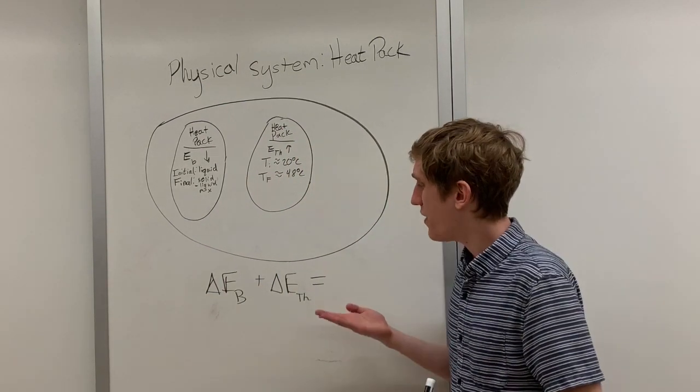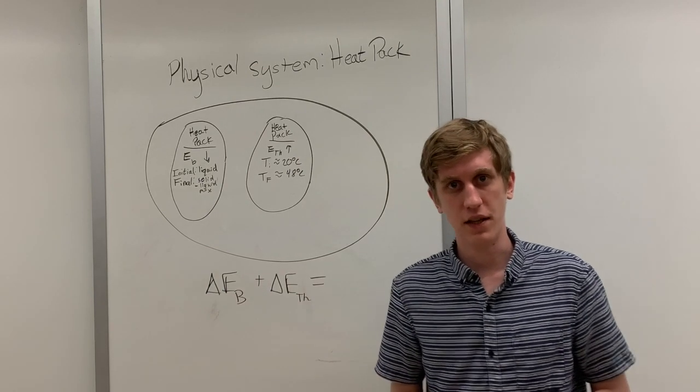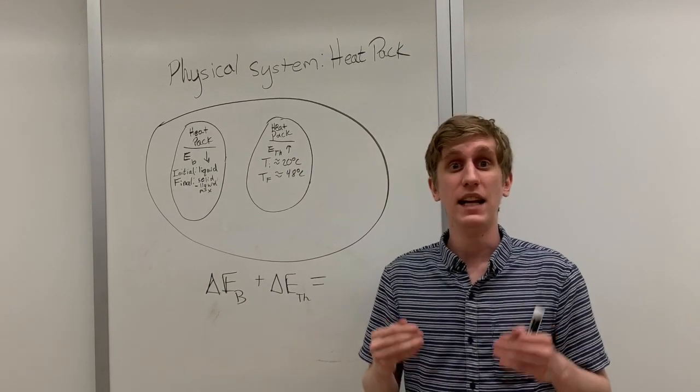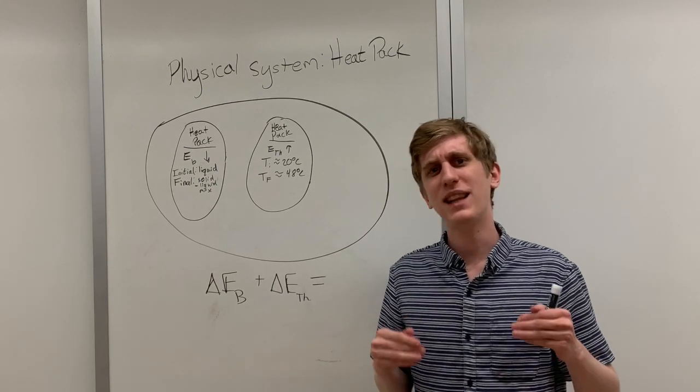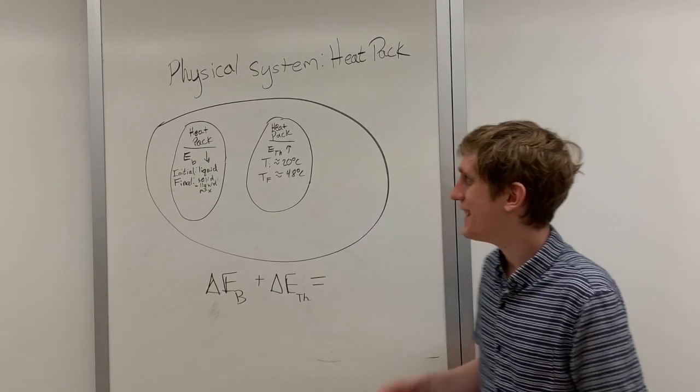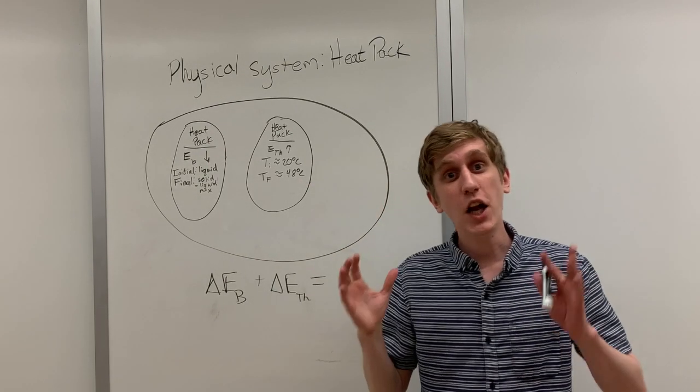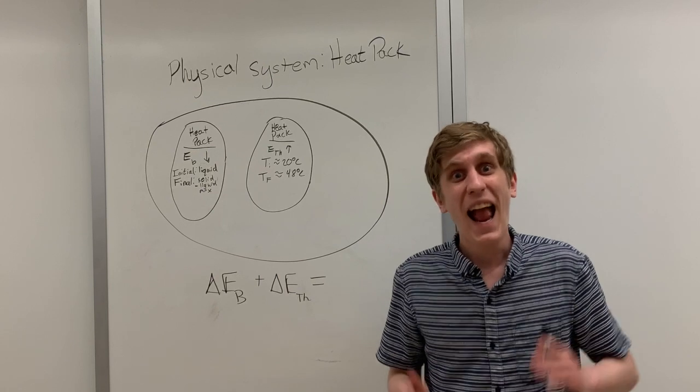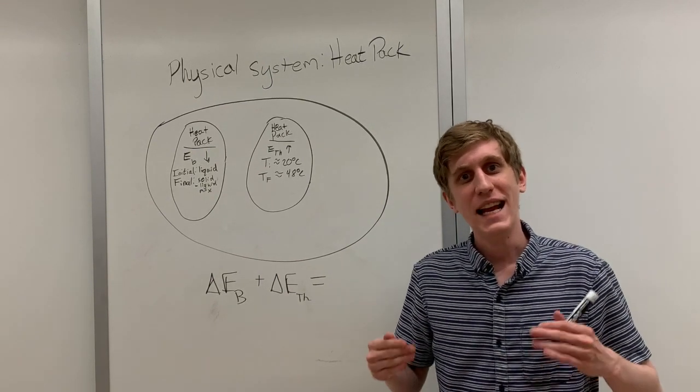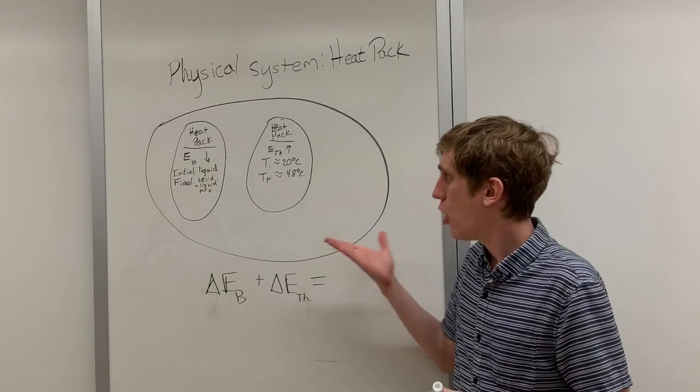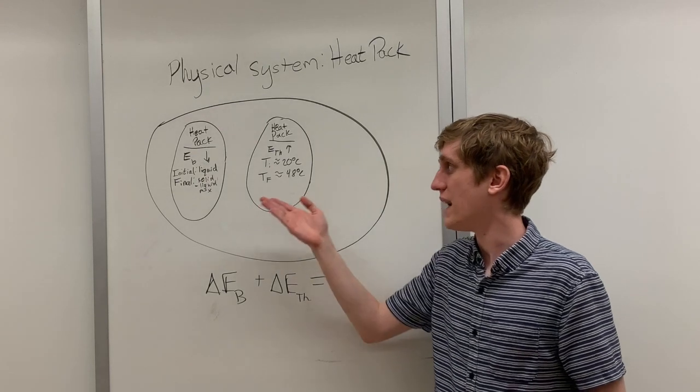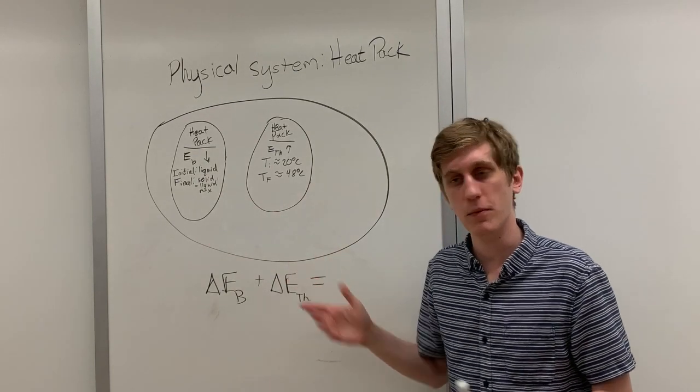But what is this equal to? In general we know that the changes in all the energy systems must be equal to Q plus W, the heat entering or leaving the system plus work done on or by the system. However this system is closed meaning no heat is entering or leaving and no work is being done. So the right hand side of the equation is just zero. The total energy in the system is not changing. It's just transferring between the bond energy and the thermal energy.